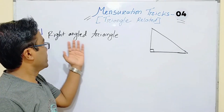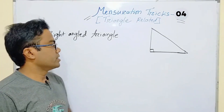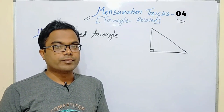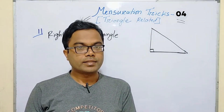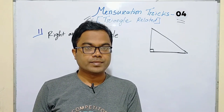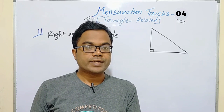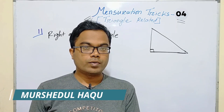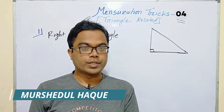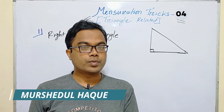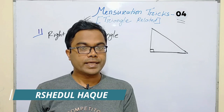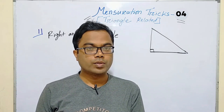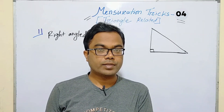This is a right angle triangle. A right angle triangle is one whose one angle is 90 degrees. In Bangla it is called 'shama kuni tribhuj' — a right angle triangle.